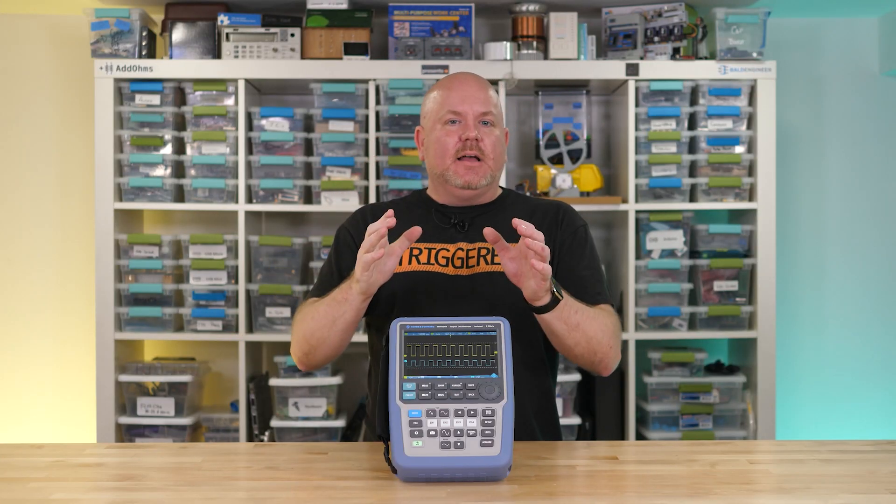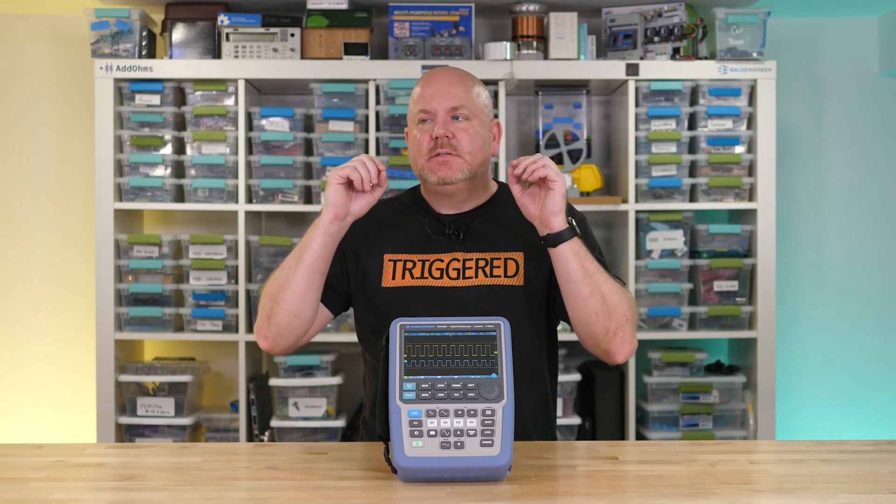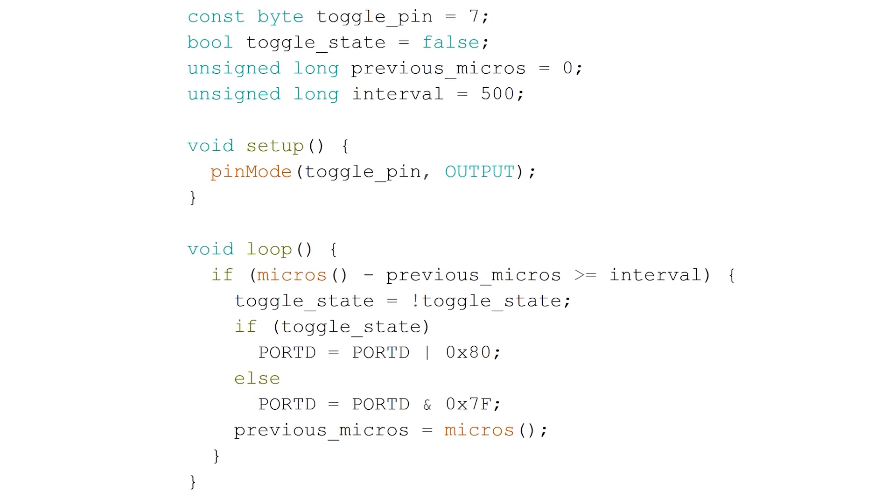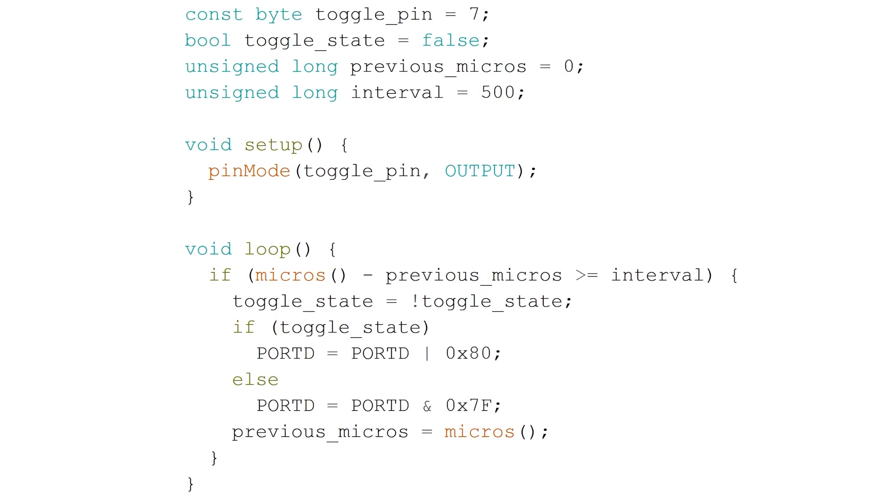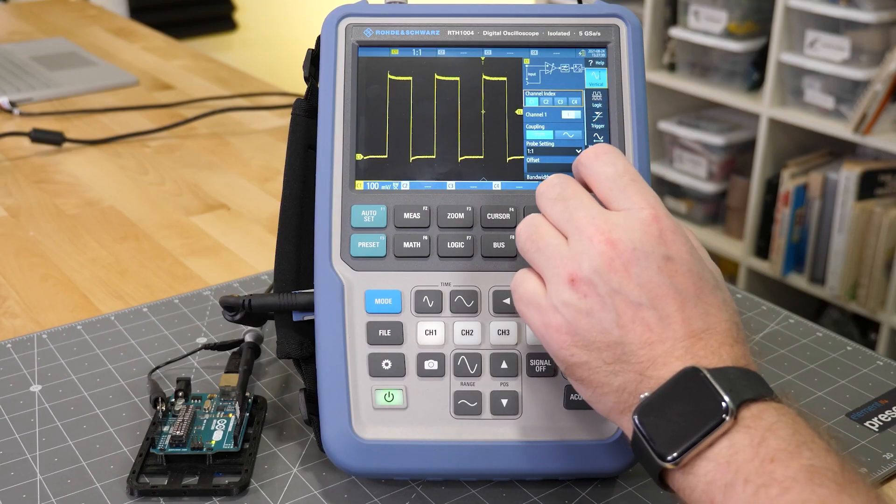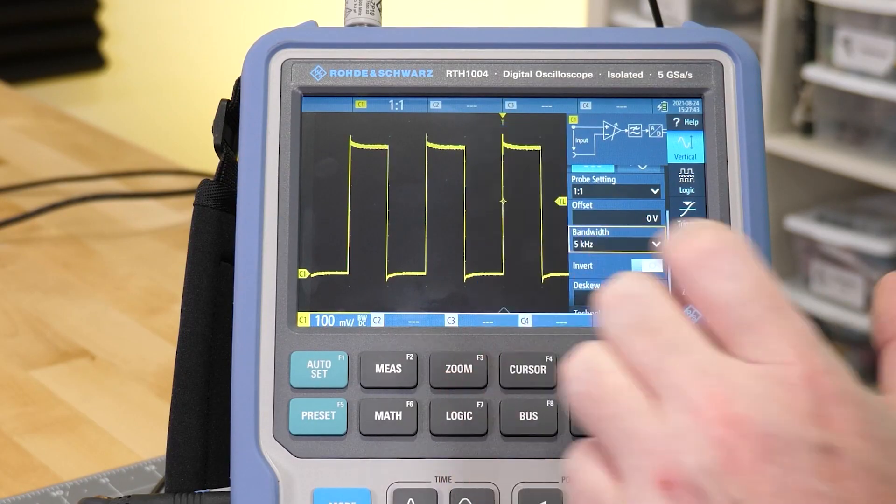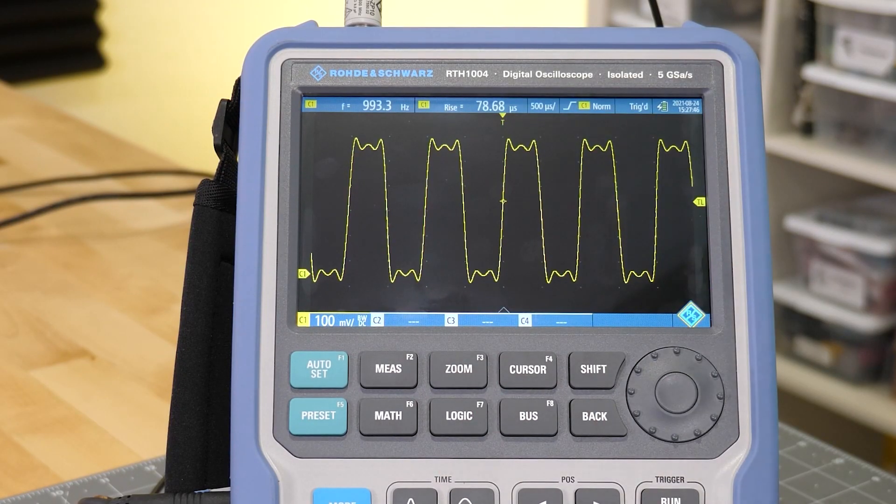Now that I've given you a guideline on how to pick bandwidth, here's a little bit of an exception when measuring slow digital signals. For this setup, an Arduino Uno toggles a pin at about 1 kHz. Based on what I said in the last section, we should take 1 kHz times 5 to set a bandwidth limit of 5 kHz. Hey, wait a second. Why did the signal change so much?